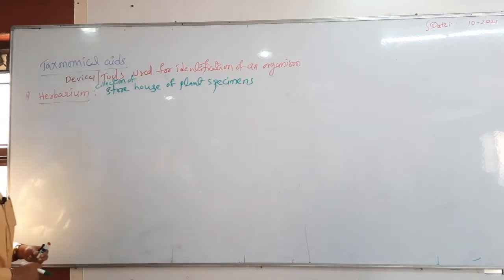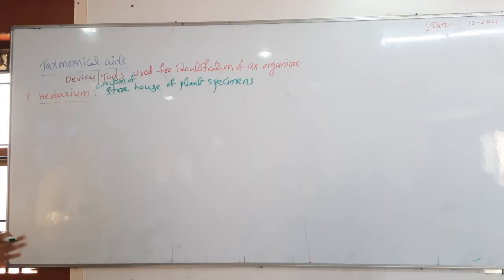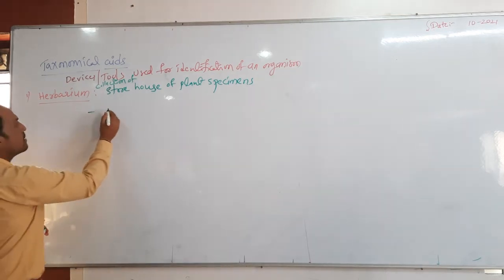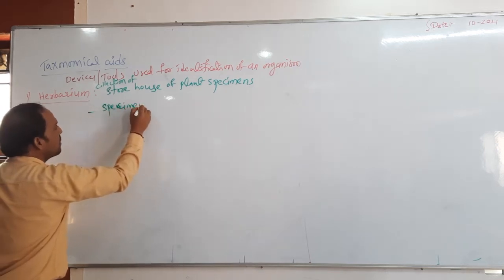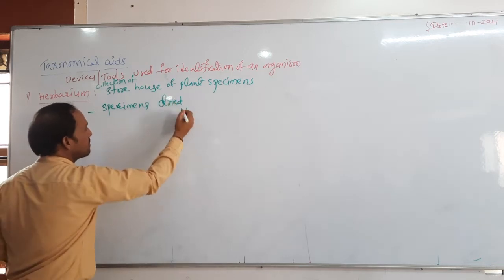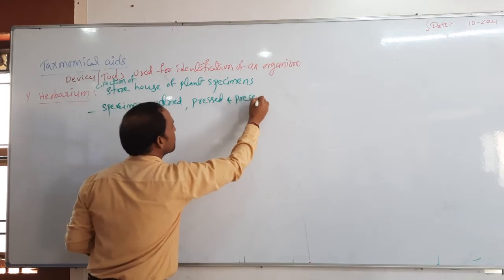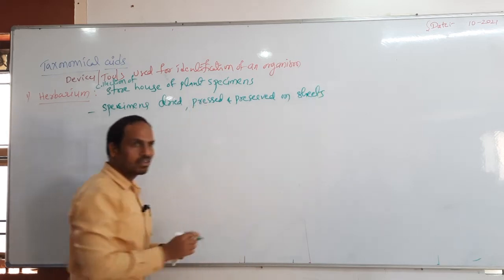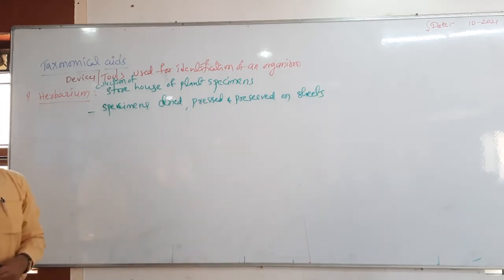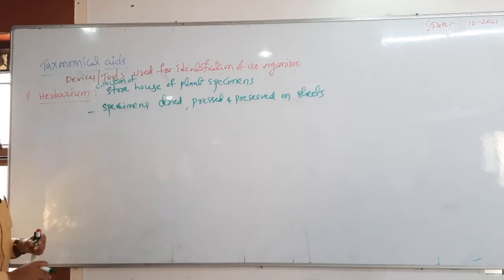This is important - it is a statement level question. The collection or storehouse of plant specimens is called herbarium. The specimens are dried, pressed, and preserved on herbarium sheets.